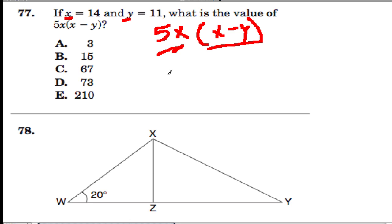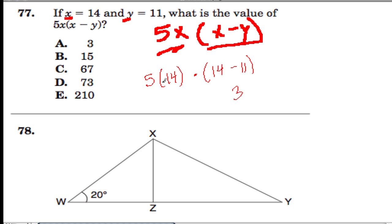So x is 14, so 5x is 5 times 14. And then x minus y — x is 14, y is 11, so 14 minus 11 is 3. And 5 times 14: 5 times 10 is 50, and 5 times 4 is 20, and that's 70. 70 times 3 is just like 7 times 3 but 10 times bigger, so that's 210.